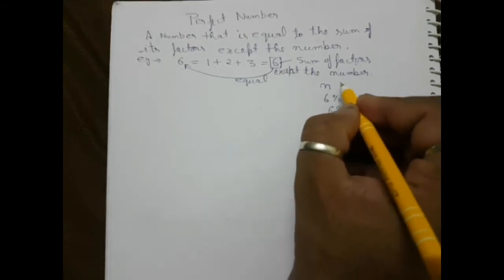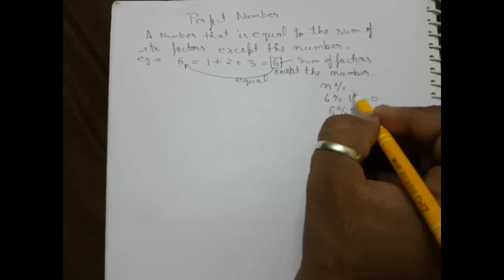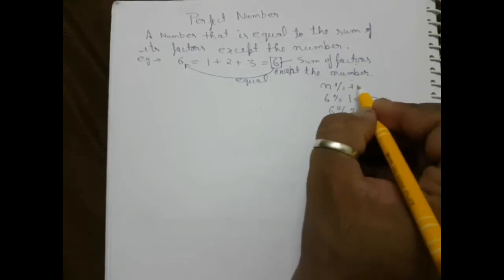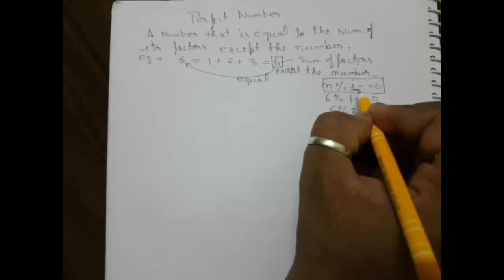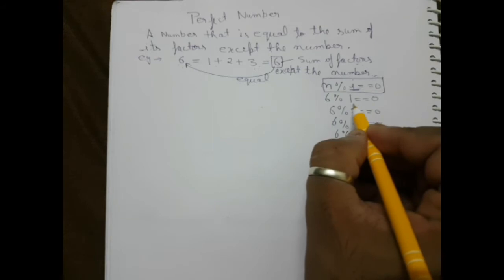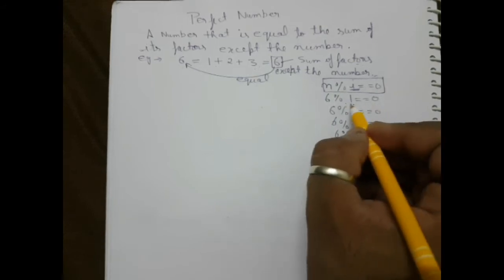To generalize this, we write n mod i, where i is any variable I can take. If n mod i equals zero, then i is a factor.